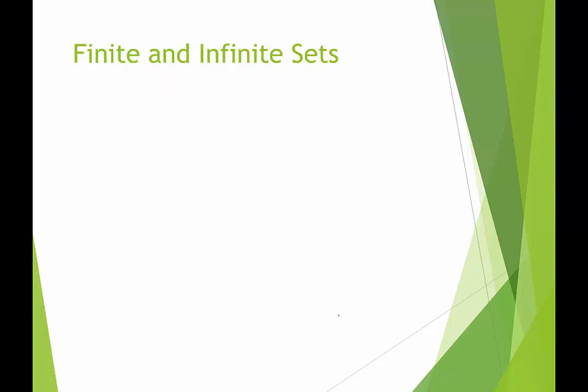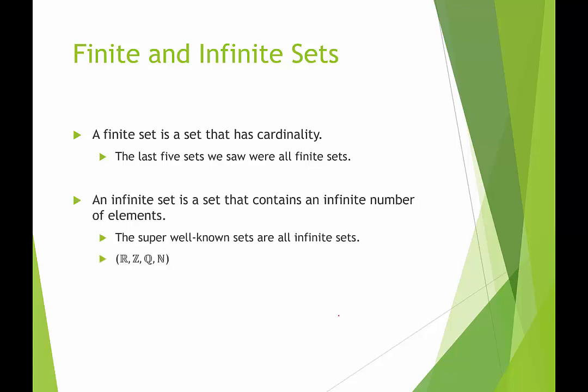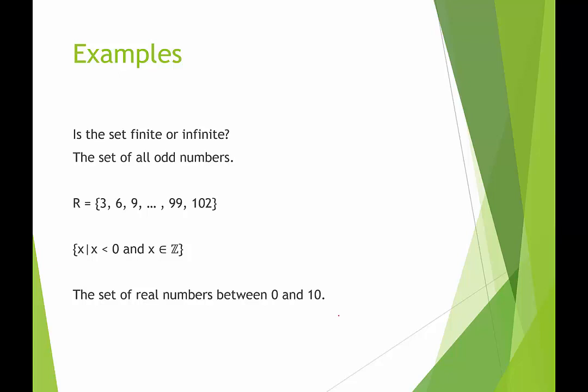Let's look at the difference between finite and infinite sets. A finite set is a set that has cardinality. The last five sets we just looked at, those all were finite sets. They all had cardinality. An infinite set is a set that contains an infinite number of elements. So the super well-known subsets of real numbers, R, Z, Q, and N, those are all infinite, therefore they do not have cardinality.